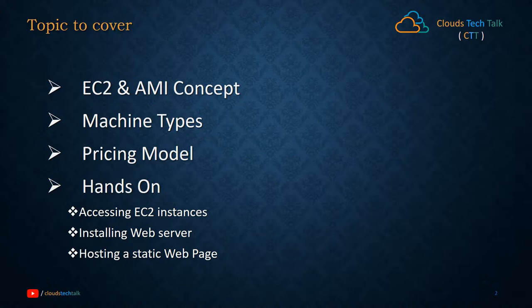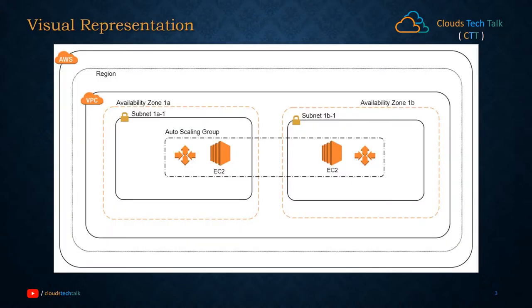I assume you have already gone through earlier videos where I explained about AWS overall architecture and how they are placing their infrastructure worldwide. The outer perimeter is the AWS cloud, then we have an AWS region, and after that we can create a VPC — that is a virtual private cloud for you only. Within that VPC we have availability zones.